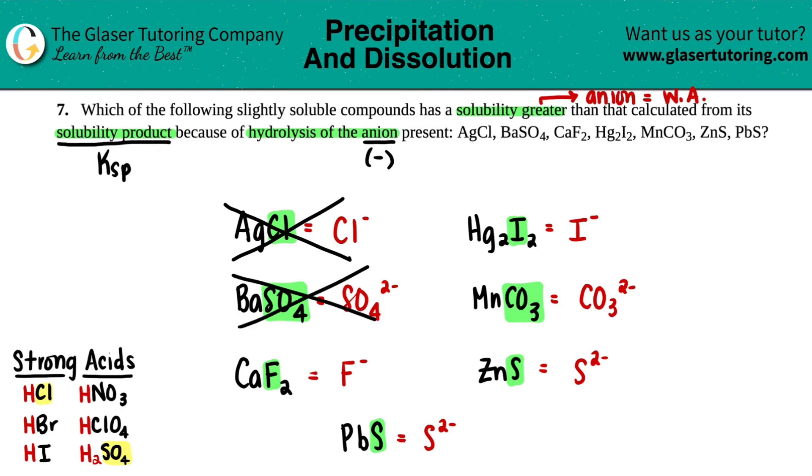And since it's coming from a strong acid, it's not going to make that solubility greater, so I can cancel this out. Next one, F minus: is there an F as one of the anions in your strong acid? I don't see it, so that means that this came from a weak acid, so I'm going to highlight this one as one of my answers.